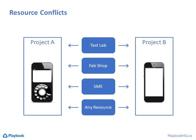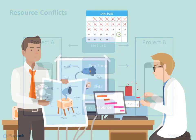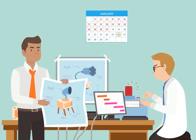For example, when two projects are competing for the same resource and one has to be delayed, everyone can agree which product has to wait — and it's not decided by which program manager has the most influence. It also allows teams to know when it's smart to pay extra to expedite things that are truly impacting the schedule.